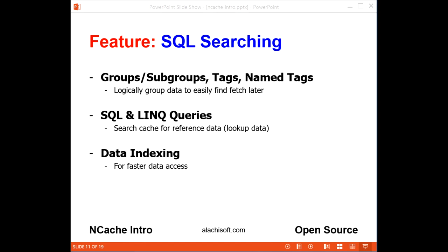If you're putting a lot of data in the cache, NCache lets you search for it based on object attributes, groups, tags, and name tags, which makes it really easy to find your data. You can use SQL or LINQ queries for searching the cache, and NCache also creates indices to speed up your searches.